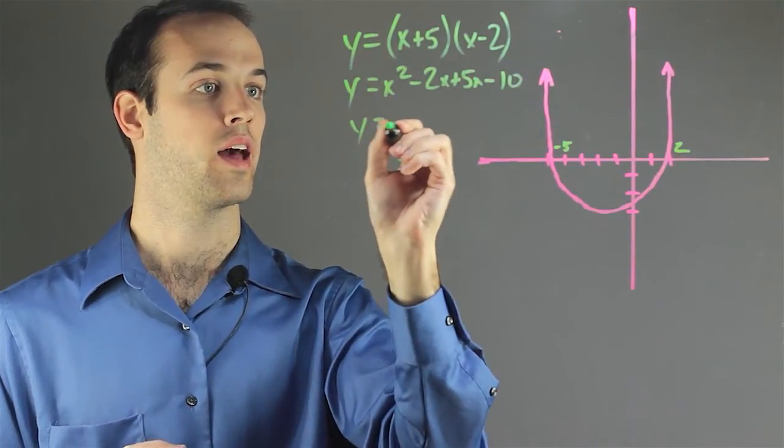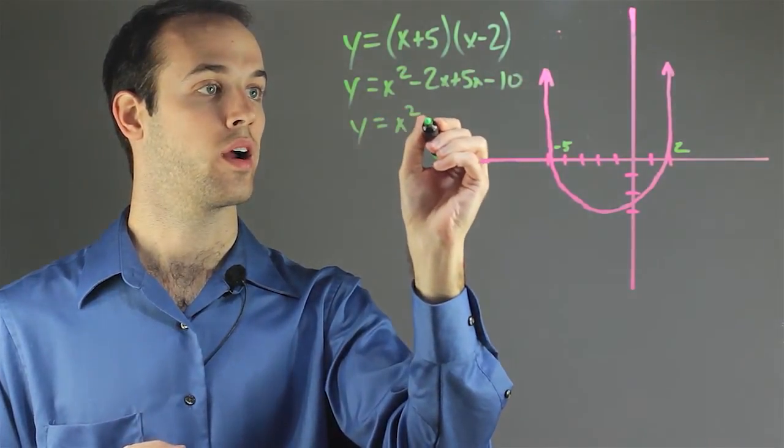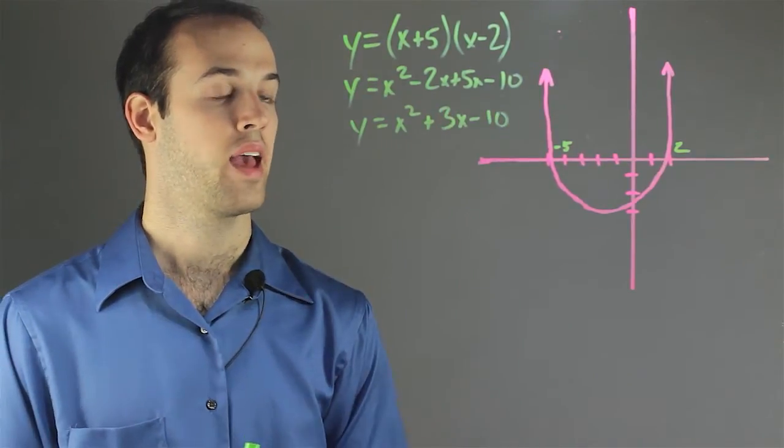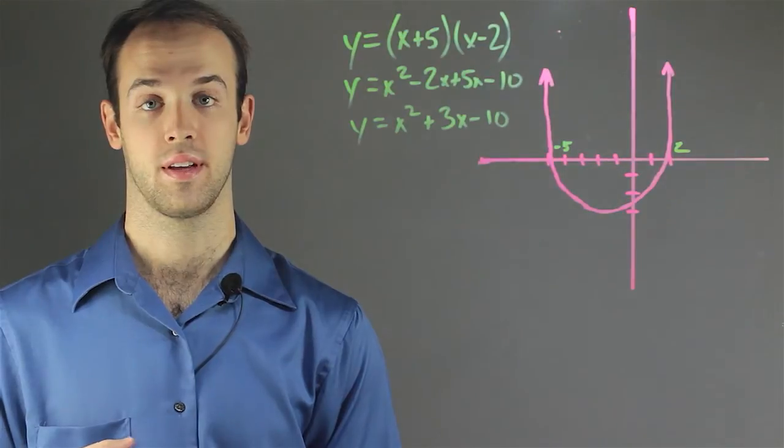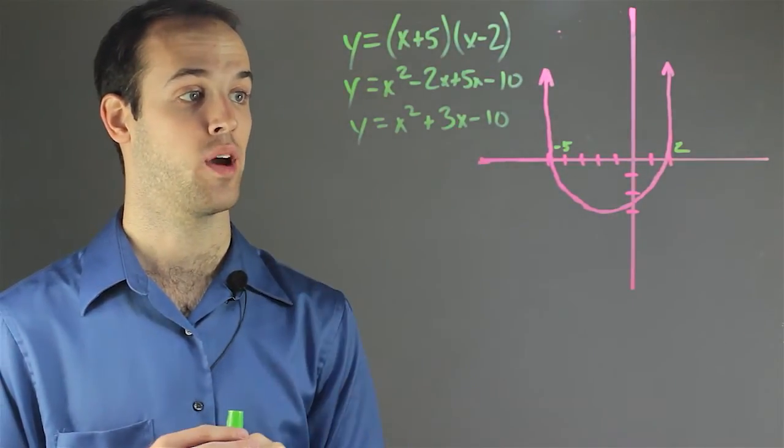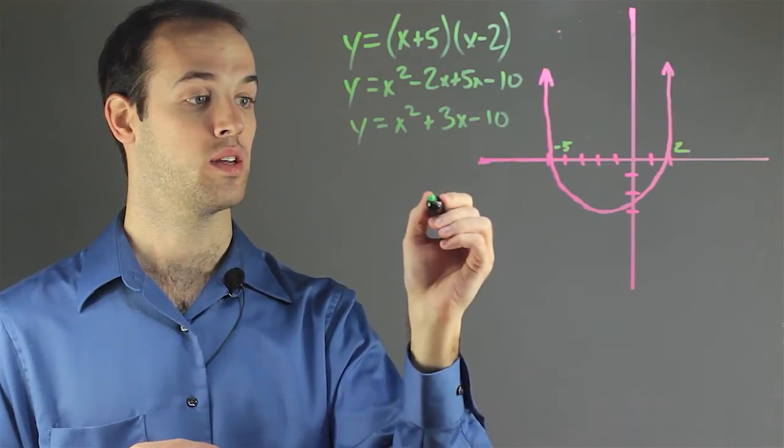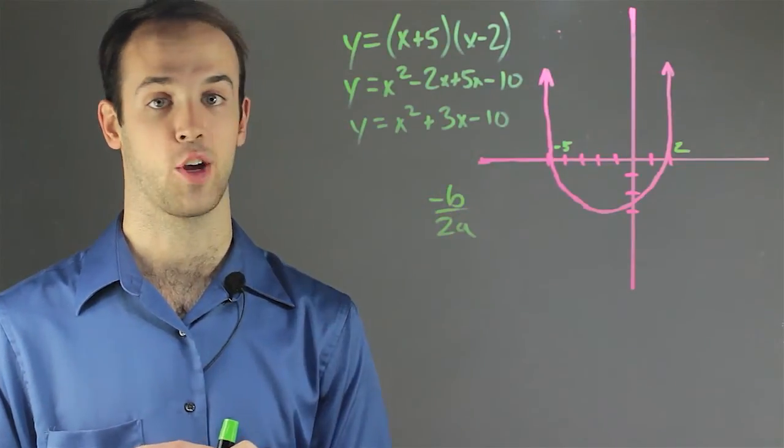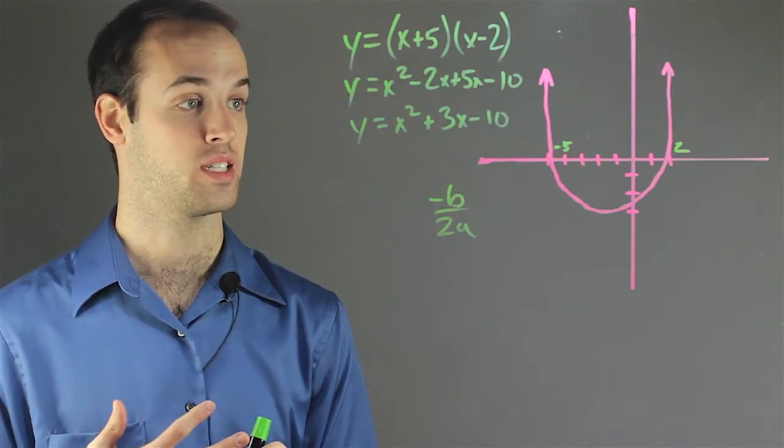And simplify that would be x squared plus 3x minus 10. And now to test these parameters, we're going to actually have to graph this function, the function that we just came up with. So we would use negative b over 2a just to find the x value of the coordinate that represents the vertex.